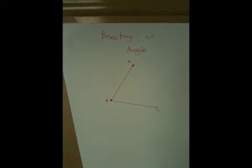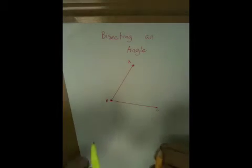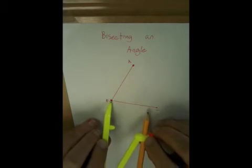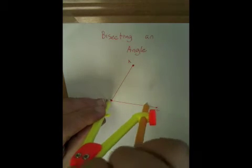All right, now we're going to learn how to bisect an angle. If you're given an angle such as this one here, ABC, and you want to bisect it, first take your compass and sweep an arc from point B